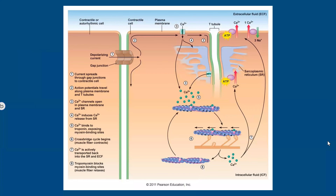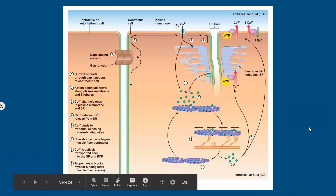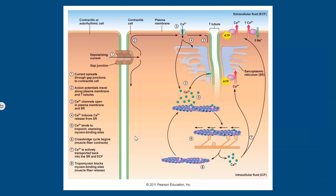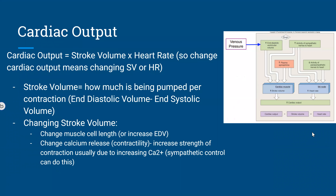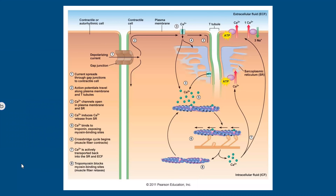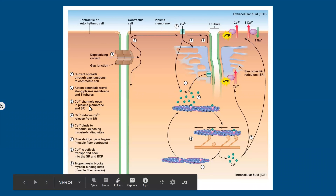A tip for the exam: draw a simple diagram to visualize excitation-contraction coupling rather than trying to memorize every word. Just remember the key chain: calcium-induced calcium release from the sarcoplasmic reticulum. Also, this coupling in cardiac myocytes is different from skeletal muscle — in skeletal muscle you do not have calcium-induced calcium release.